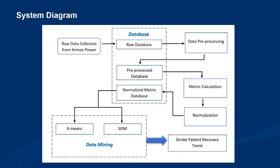Here is the system diagram. By using the raw data collected from Army Power, using the game EFEE and EFES, the system is consisted of five parts: database, data pre-processing, metric calculation, normalization, and data mining. All steps operate in the sequence as shown. The obtained recovery trend can provide objective guidance for clinicians.